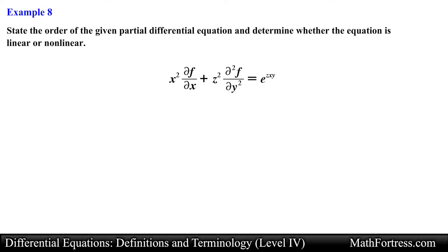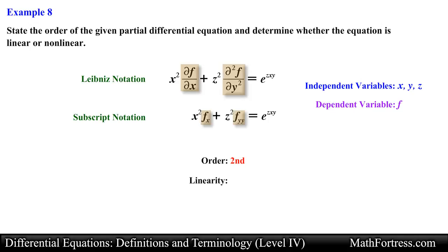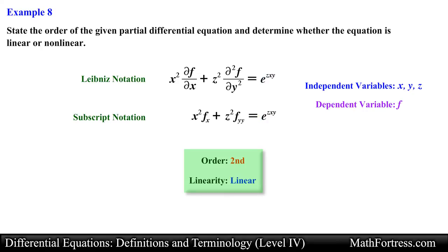Let's work on the final example. Here we have a PDE written in Leibniz notation. We can also rewrite it using subscript notation. The dependent variable is f and the independent variables are x, y, and z. For the order, this equation contains two partial derivatives: a first partial derivative and a second partial derivative. The higher of these is the second partial derivative, so the order is second order. Checking linearity: the partial derivatives are raised to the power of 1, the products of the partial derivatives are solely in terms of the independent variables, and the exponential function is also solely expressed in terms of the independent variables. This makes the PDE linear. In the end, this PDE is a second order linear PDE. And this is how you classify PDEs by order and linearity.